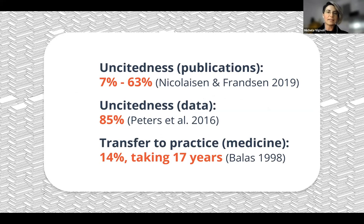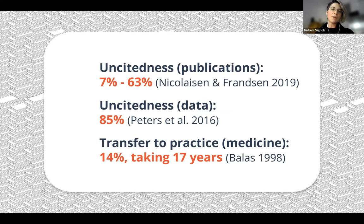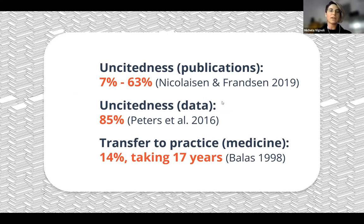Unfortunately, there hasn't been a lot of innovation when it comes to discovery systems. In Google Scholar, you don't get a lot of support for creating a mental model. We can also see this in the data: depending on the field, between 7% and 63% of publications are uncited. 85% of published data sets are uncited. But the biggest problem is the transfer to practice — even in medicine, only a small percentage of research results ever gets transferred, and with considerable delay.